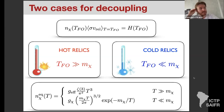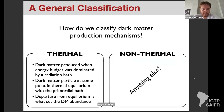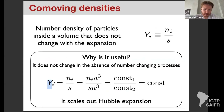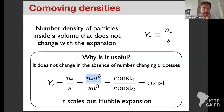Sudipta asks: if entropy conservation is violated, what is a good variable instead of Y? Excellent question. The variable I use in that case is n_χ · a³. Even if entropy is not conserved, this combination is constant when there are no number-changing interactions. This combination is widely used in the literature.